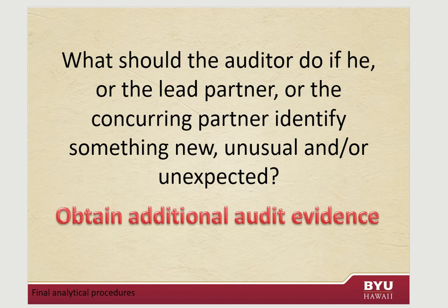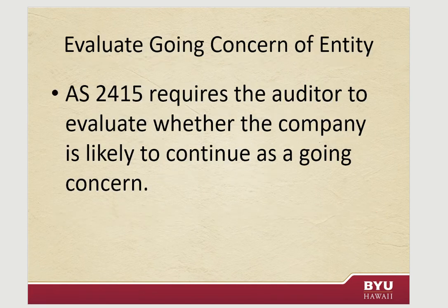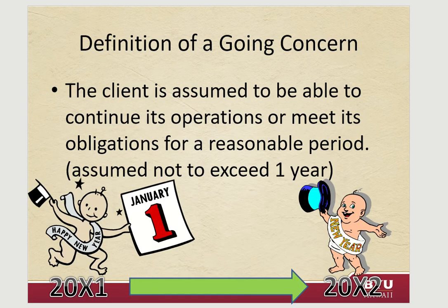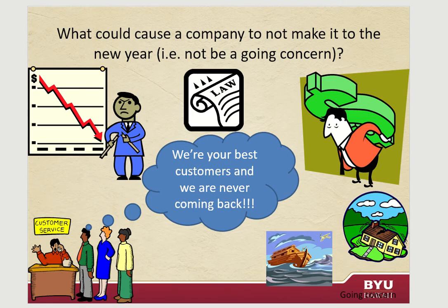If the lead partner or the concurring partner identifies something unusual or unexpected, that's when you get called back to the client site. Auditing standards require evaluating if the company is going to be a going concern. The definition: a client is assumed to be able to continue its operations or meet its obligations for a reasonable period, assumed not to exceed one year — meaning they are financially stable and not at risk of going bankrupt.